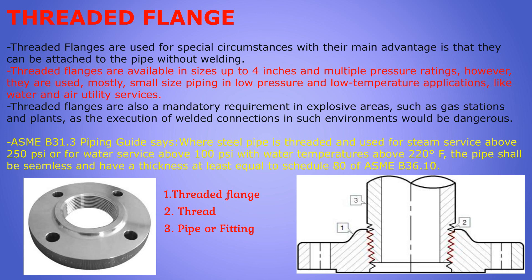Threaded flanges are used for special circumstances; their main advantage is that they can be attached to pipe without welding. Threaded flanges are available in sizes up to four inch with multiple pressure ratings; however, they are used mostly for small size piping in low pressure and low temperature applications like water and air utility services. Threaded flanges are also a mandatory requirement in explosive areas such as gas stations and plants, as the execution of a welded connection in such environments would be dangerous.